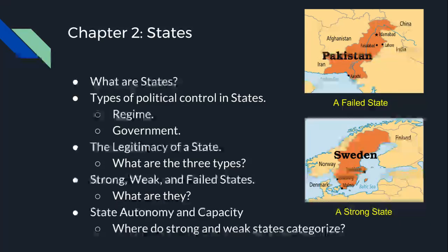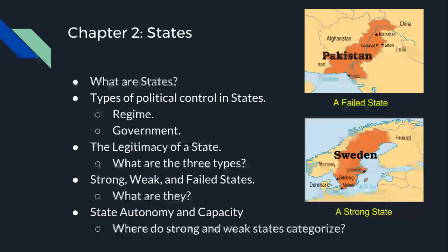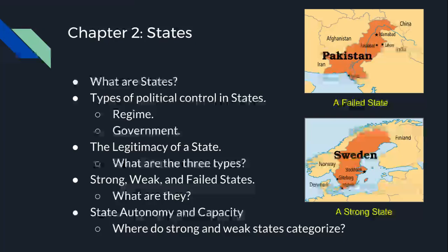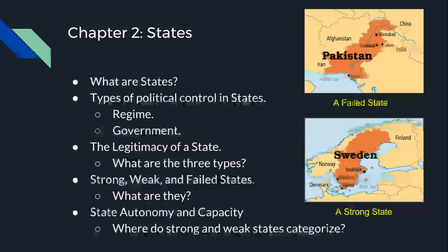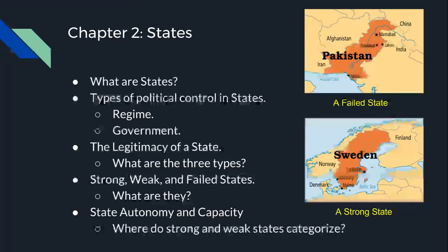Then we get into strong, weak, and failed states. A strong state is able to fulfill basic tasks and defend its territory. A weak state is the exact opposite — it cannot fulfill basic tasks or defend its territory. A failed state is like a weak state, except it may become so weak that it loses almost all of its control and breaks down. An example of a weak state would be Pakistan, and a strong state would be Sweden. High autonomy and high capacity characterize a strong state; low autonomy and low capacity characterize a weak state.